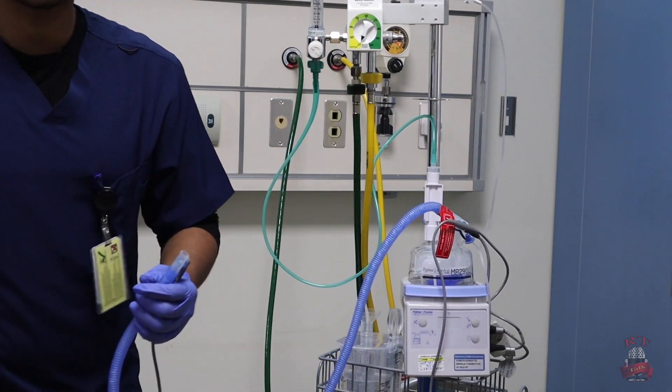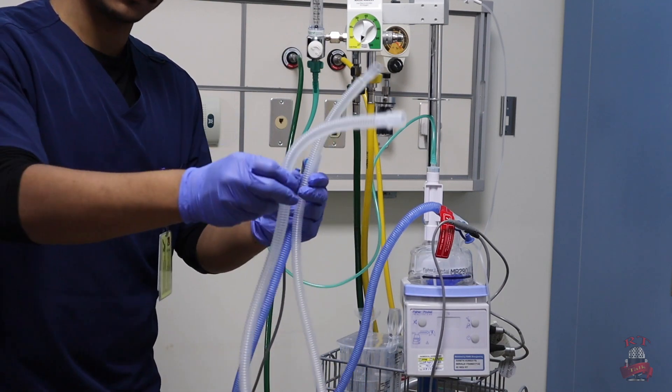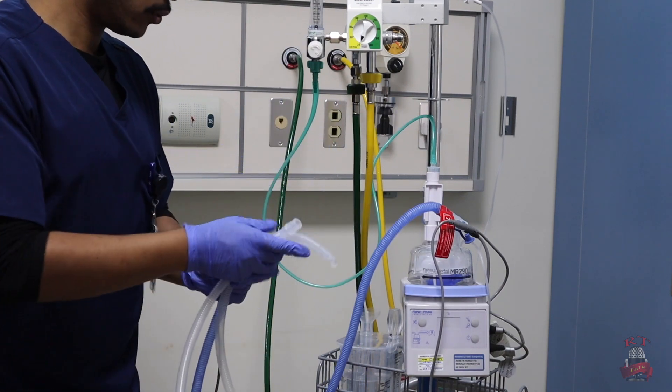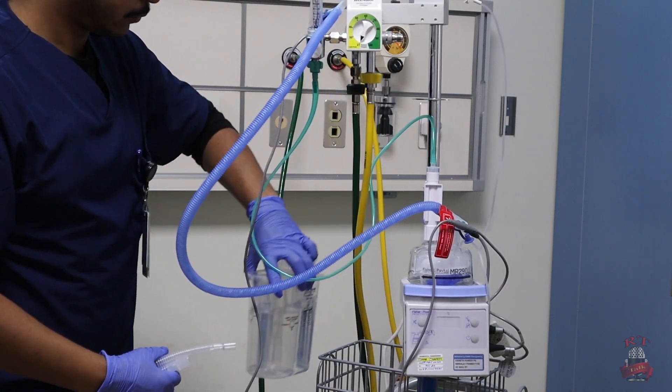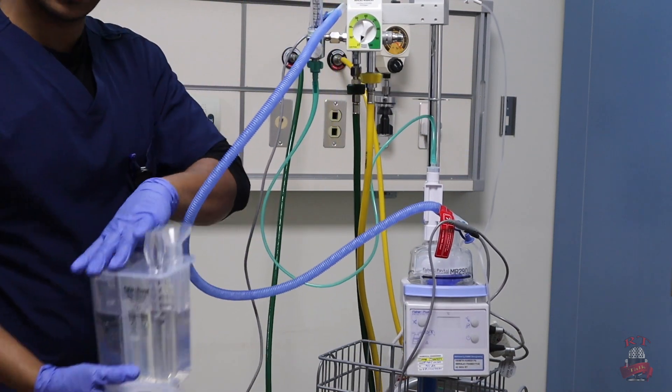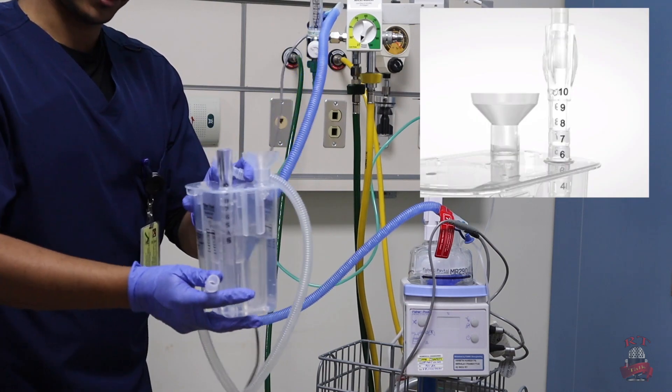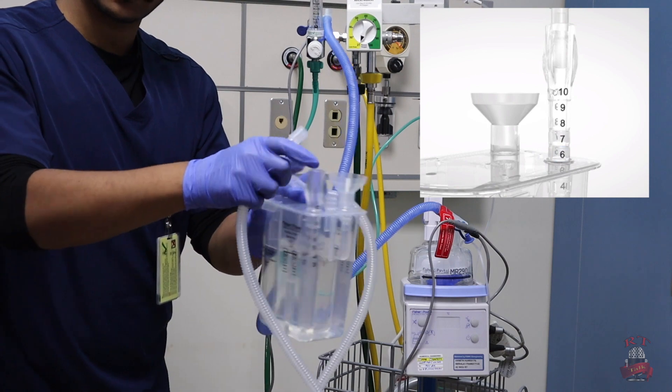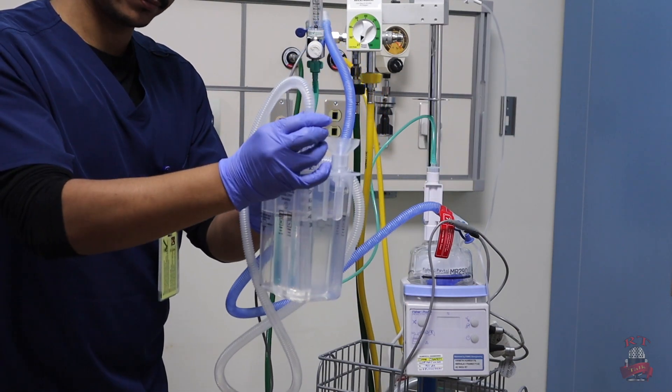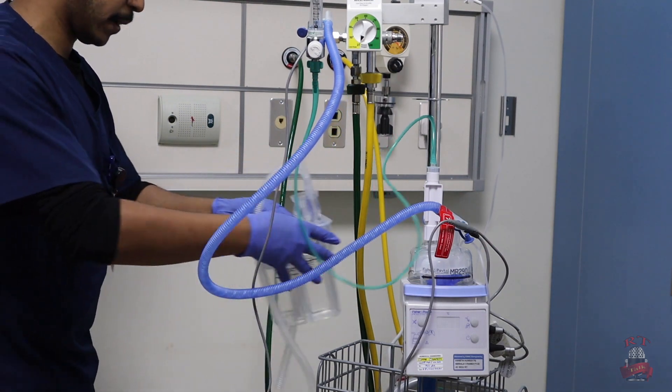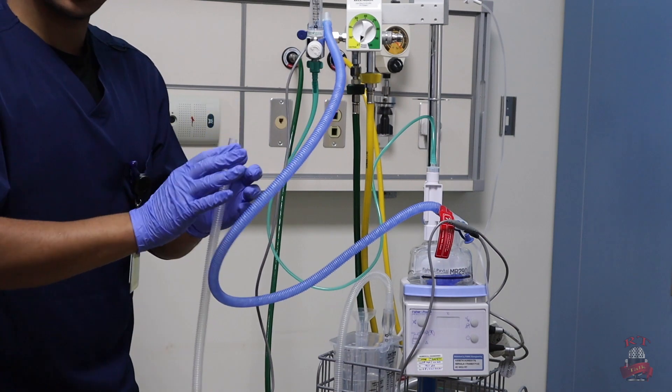After that, we will take the expiratory limb, the white one, and we will connect it into our bubble CPAP generator. Here, on this side. So I connect my expiratory limb and put back my bubble CPAP in the place. Now after I connect everything.